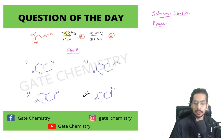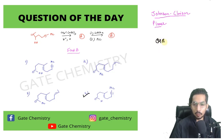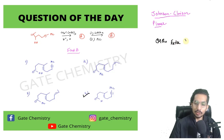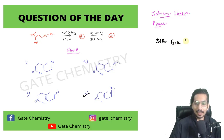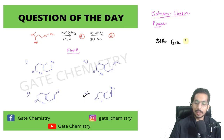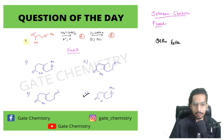The reagent given here is called an ortho ester. Whenever you have three alkoxy groups attached to a carbon, that compound is an ortho ester. Whenever you come across ortho esters in an examination, in most cases a sigmatropic reaction or some kind of pericyclic reaction is going to take place — most importantly a sigmatropic reaction, especially when alcohols are given to you.